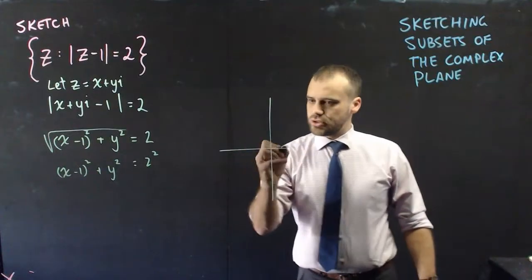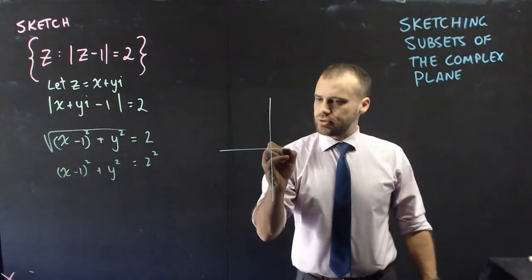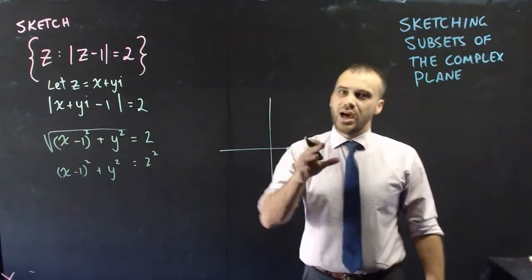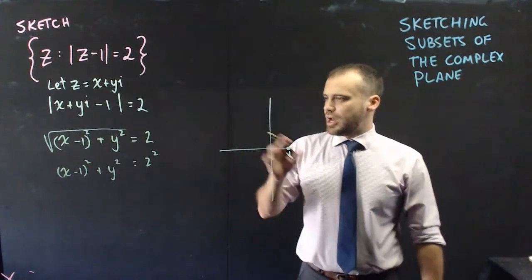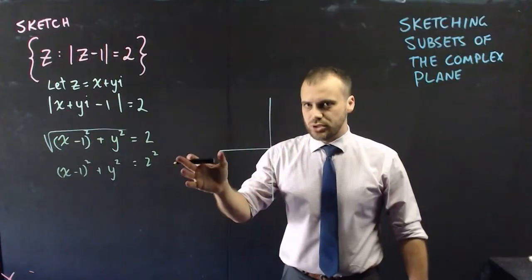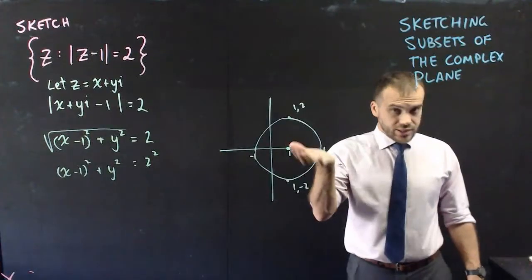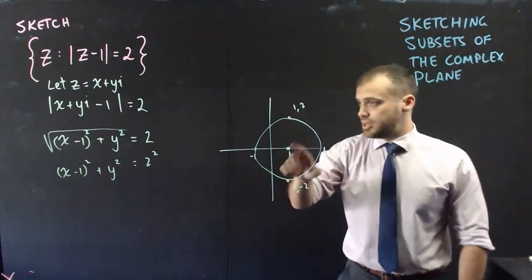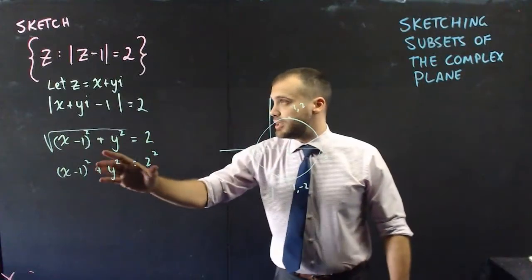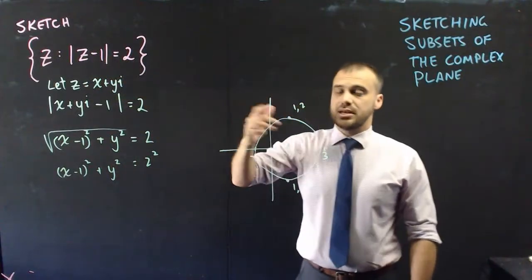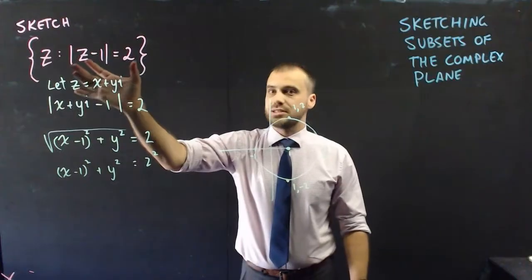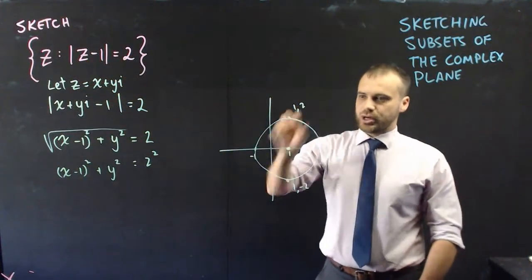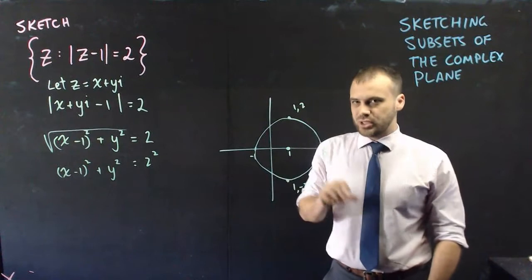That's a circle with centre at 1 (on the real axis) and radius 2. This circle is the subset of z that meets the given condition. I've worked through that algebraically and obtained the picture.